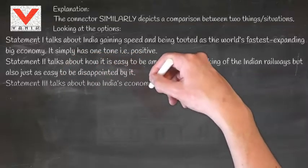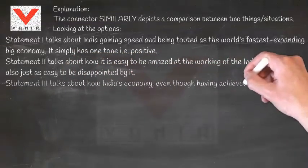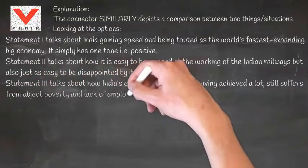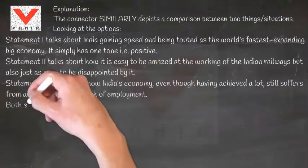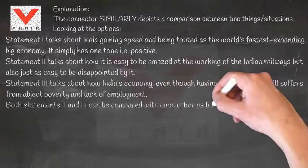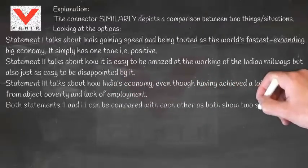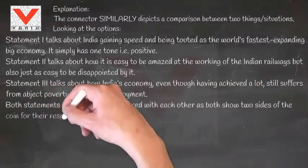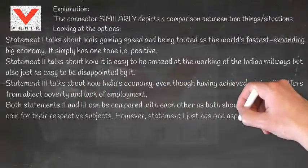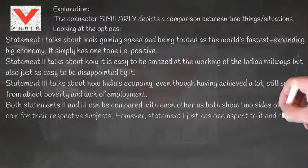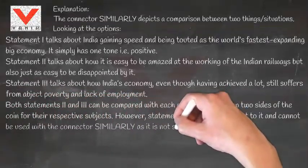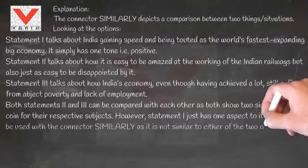Statement 3 talks about how India's economy, even though having achieved a lot, still suffers from abject poverty and lack of employment. Both statements 2 and 3 can be compared with each other as both show two sides of the coin for their respective subjects. However, statement 1 just has one aspect to it and cannot be used with the connector 'similarly' as it is not similar to either of the two other statements.